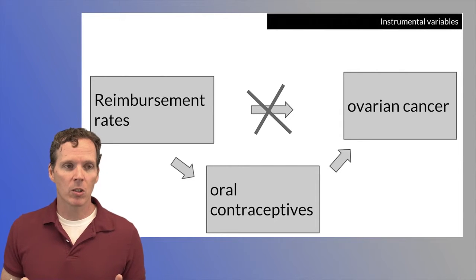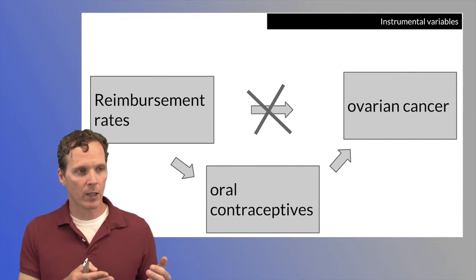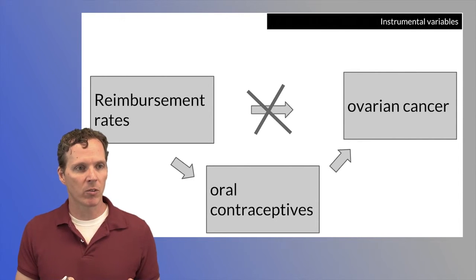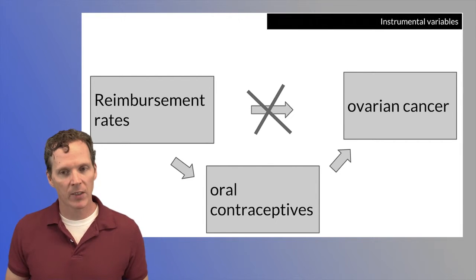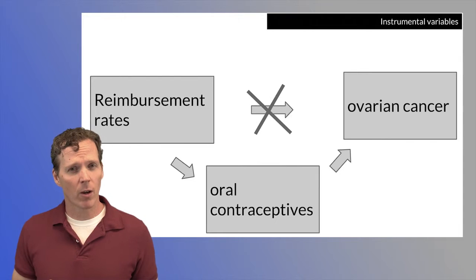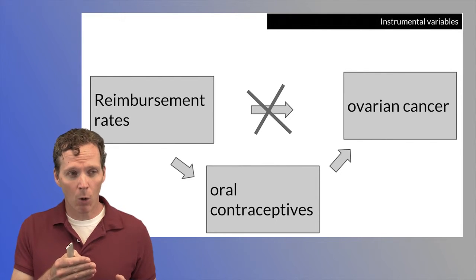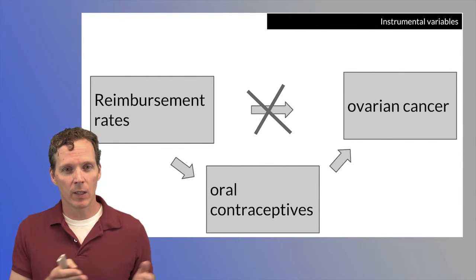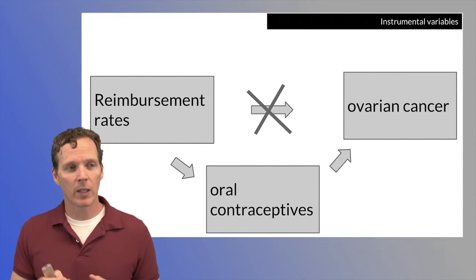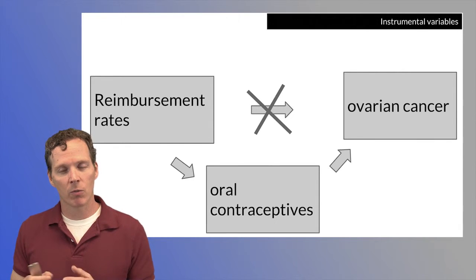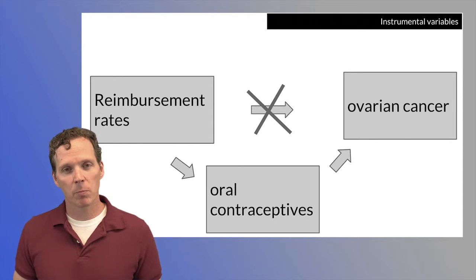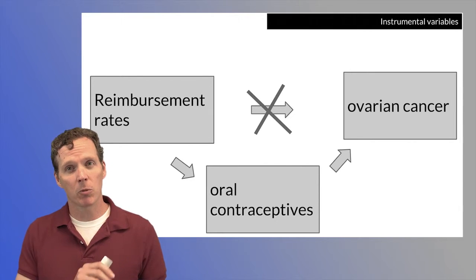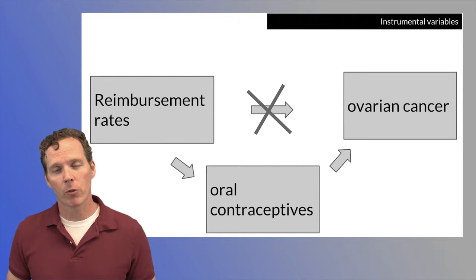There's a big assumption in instrumental variables: that the only way reimbursement rates could get to ovarian cancer is through oral contraceptive use. That assumption — that the only link between the instrumental variable and the outcome is through the variable you're interested in — is often suspect, and it's very hard to find instrumental variables. But this was an incredibly clever idea that underlies a lot of modern causal thinking and is a pretty interesting approach.